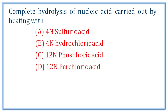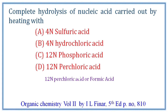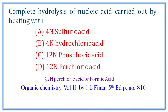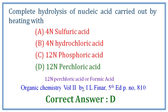Next question: complete hydrolysis of nucleic acids carried out by heating with which reagent? Option A: 4N sulfuric acid. Option B: 4N hydrochloric acid. Option C: 12N phosphoric acid. Option D: 12N perchloric acid. For complete hydrolysis of nucleic acids, we need 12N perchloric acid or formic acid. Correct answer: D.